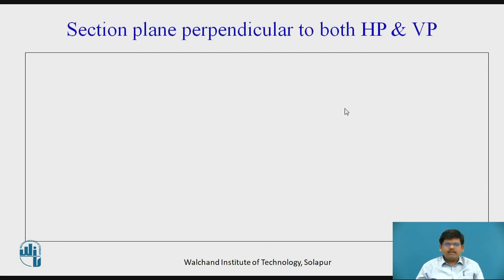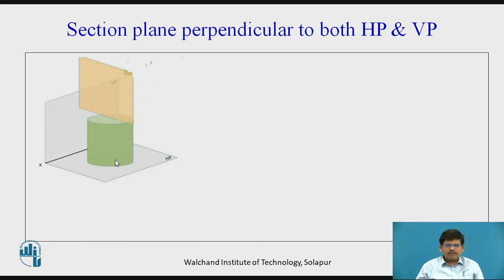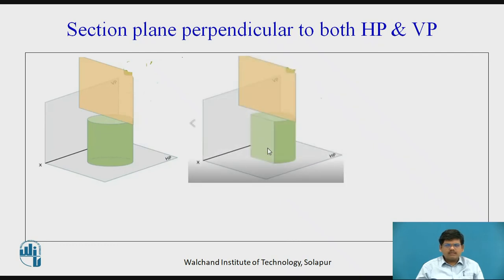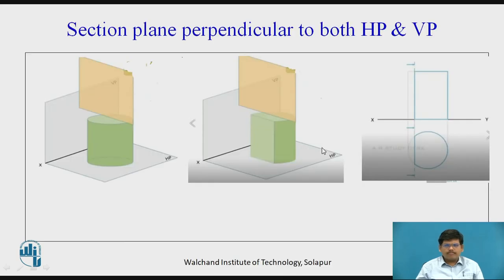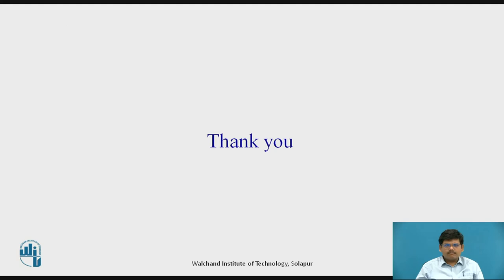Then we have the fifth condition: section plane perpendicular to both HP and VP. A cylinder resting on its base with axis vertical is shown. This is how it is being cut and its corresponding orthographic view is shown. Thank you.